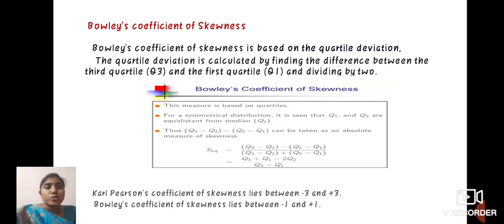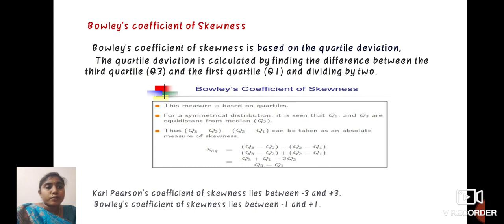Next, we define Bowley's coefficient of skewness. Bowley's coefficient of skewness is based on quartile deviation. The quartile deviation is calculated by finding the difference between the third quartile and the first quartile and dividing by 2. Karl Pearson's coefficient of skewness lies between minus 3 and plus 3, while Bowley's coefficient of skewness lies between minus 1 and plus 1. Bowley's coefficient of skewness, SKQ, equals Q3 minus Q2 minus of Q2 minus Q1 divided by Q3 minus Q2 plus Q2 minus Q1, which simplifies to Q3 plus Q1 minus 2Q2 divided by Q3 minus Q1.